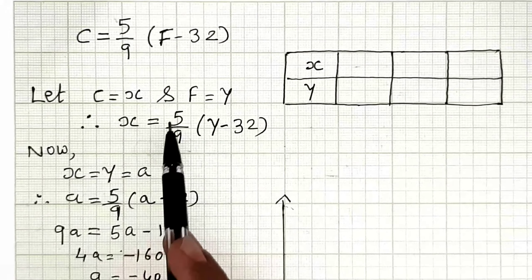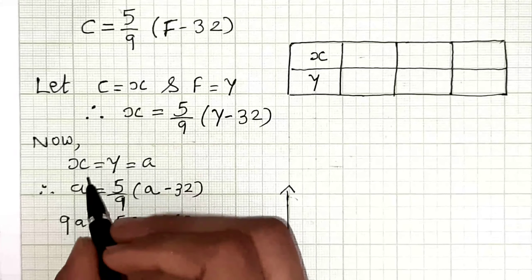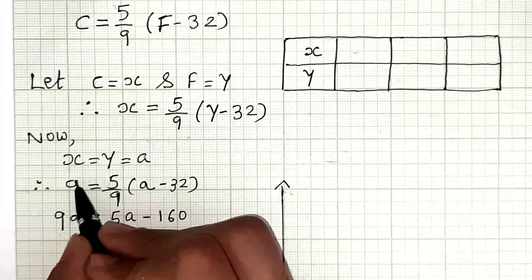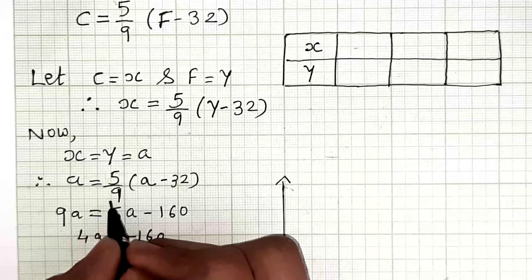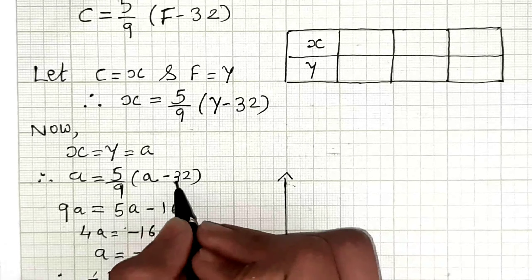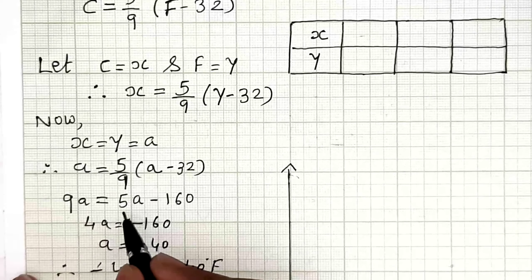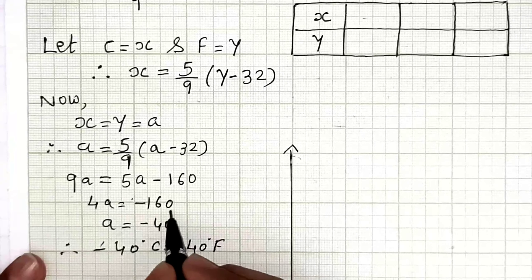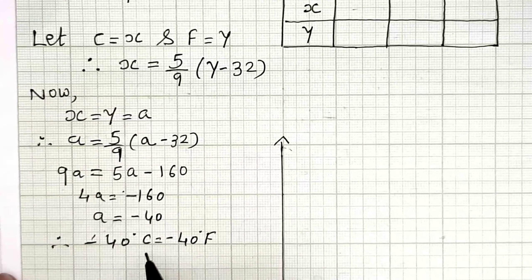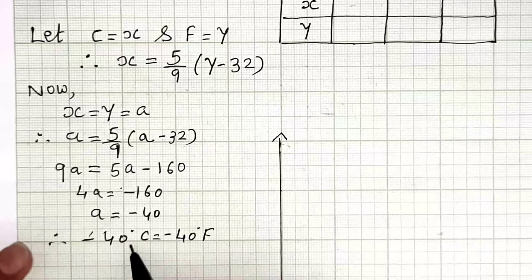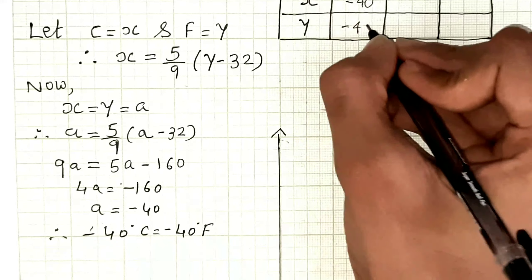We have x equals 5 by 9 into (y minus 32). To find the common temperature, we set x equals y equals a. So we get a equals 5 by 9 into (a minus 32). Simplifying: 9a equals 5a minus 160, giving 4a equals minus 160, so a equals minus 40. Therefore, minus 40 Celsius and minus 40 Fahrenheit is the common point on the graph.